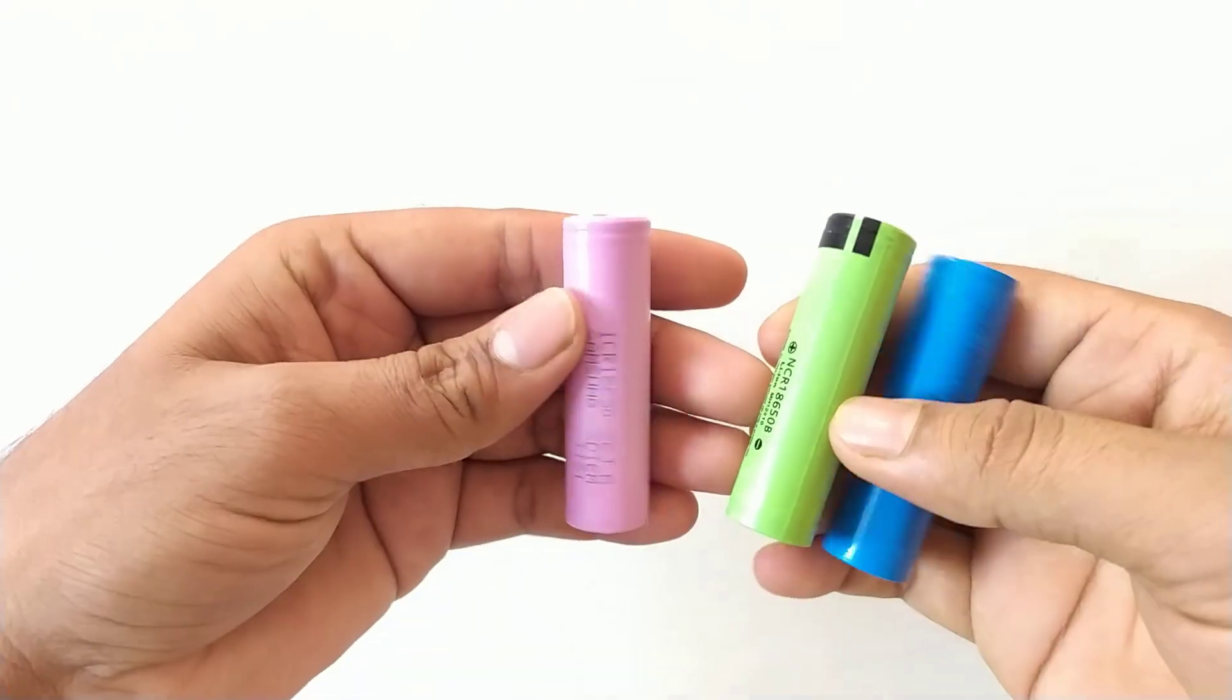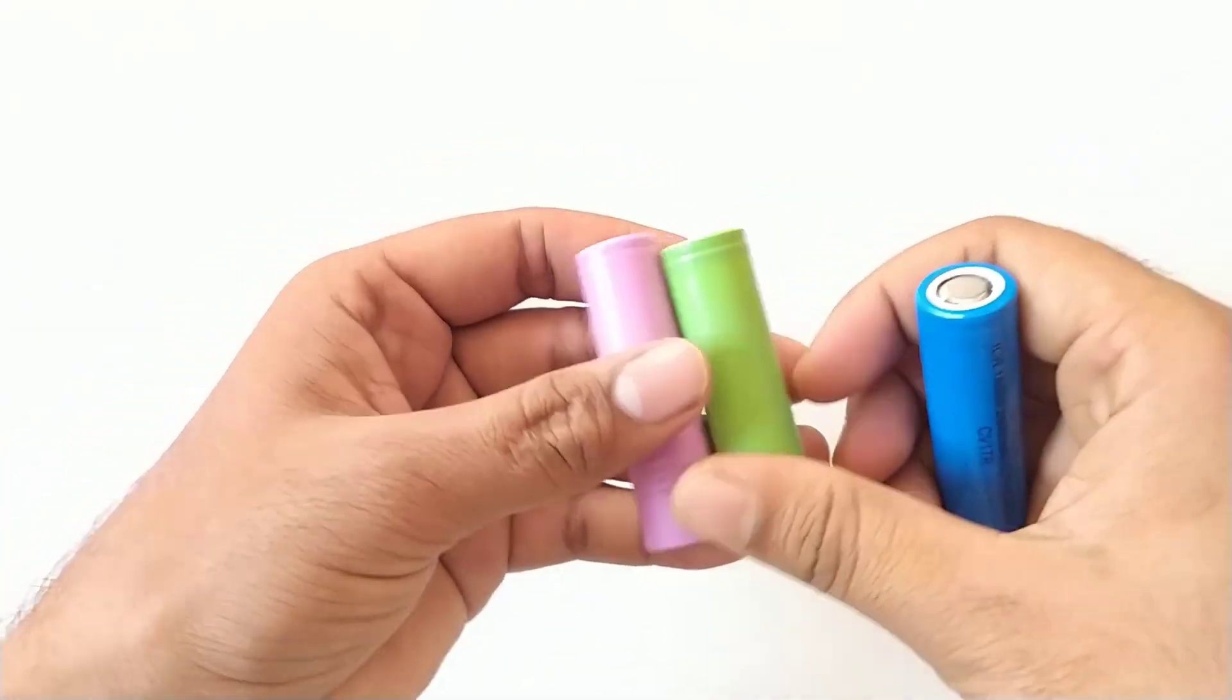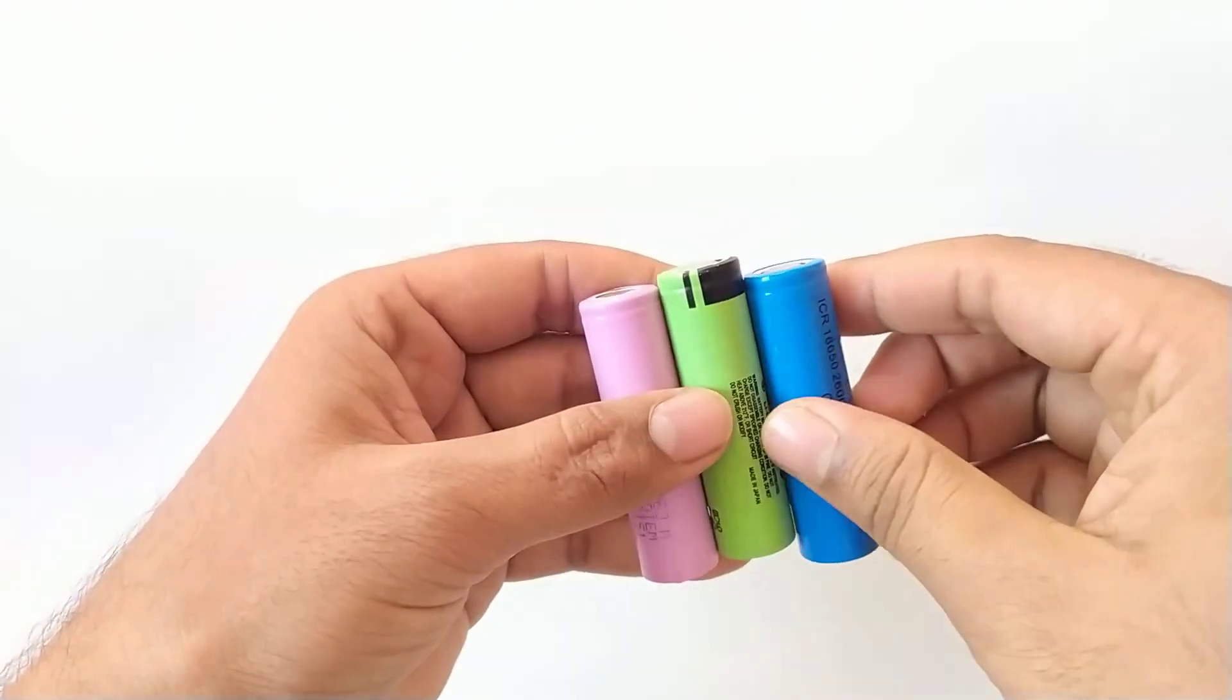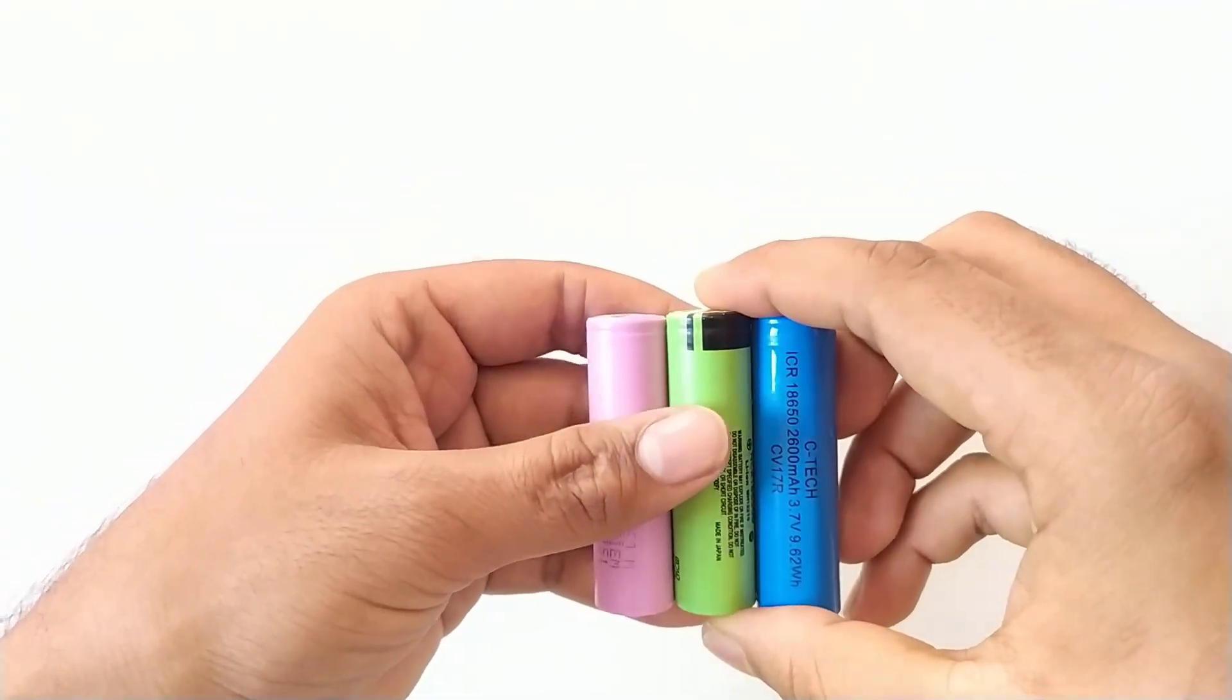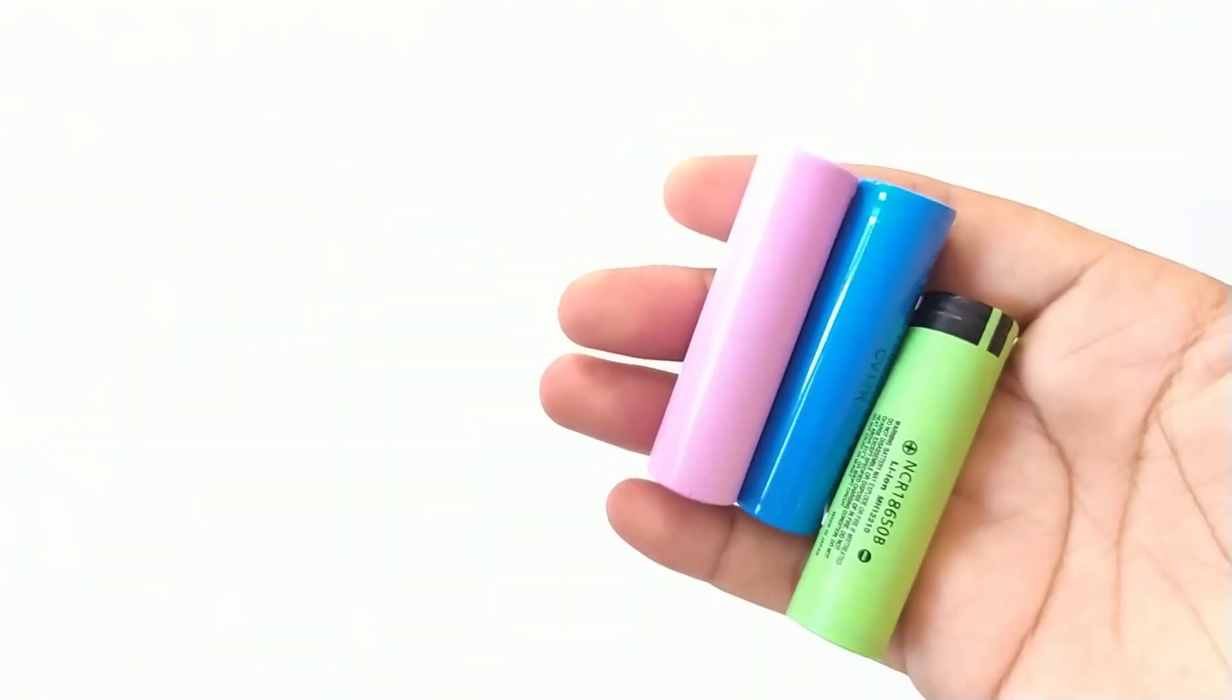But 18650 do not have any inbuilt BMS, so we should provide one when we are charging it. When I searched for a BMS for lithium ion batteries, I found this tiny PCB with TP4056 on internet.